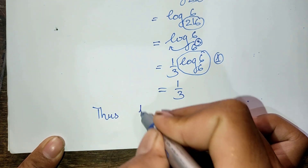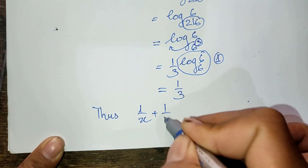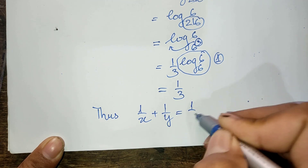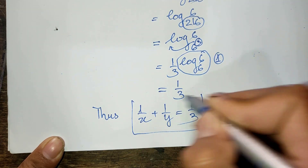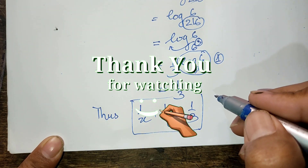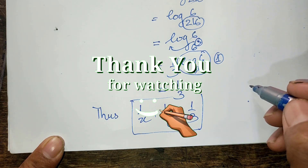So 1 divided by 8 plus 1 divided by y equals 1 divided by 3. That is our solution. If you enjoyed the video, please don't forget to subscribe to my channel for more exciting videos. Goodbye!